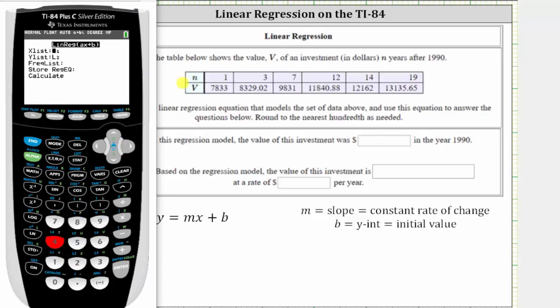On this screen we have the n values in L1 and the v values in L2, so we do not change the first two rows. In the third row we are not using a frequency list, so we leave this blank. In the fourth row we could store the equation in, for example, y1, but we don't need to for this question, so we'll skip that, go down to calculate and press ENTER.